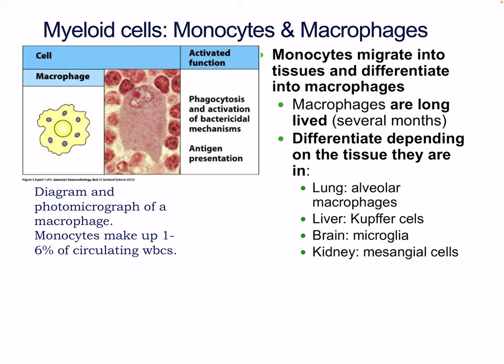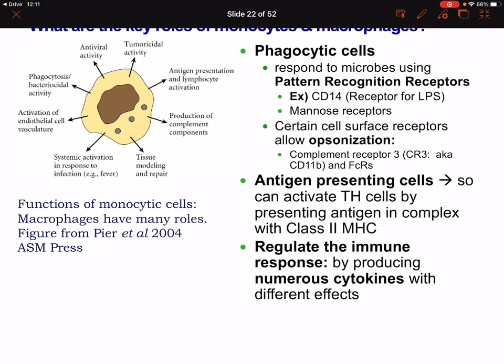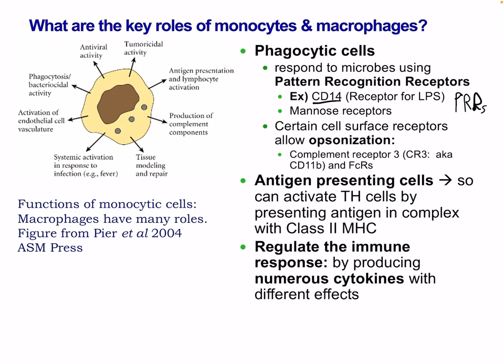Macrophages are mainly involved in phagocytosis, activation of bactericidal mechanisms, and antigen presentation. Monocytes and macrophages respond to microbes using pattern recognition receptors (PRRs) — we'll have dedicated lectures on these later. An example is CD14, which is a receptor for LPS from gram-negative bacteria. Another example is the mannose receptor. Certain cell surface receptors allow for opsonization, including complement receptor 3 (CR3, also known as CD11B) and FC receptors.